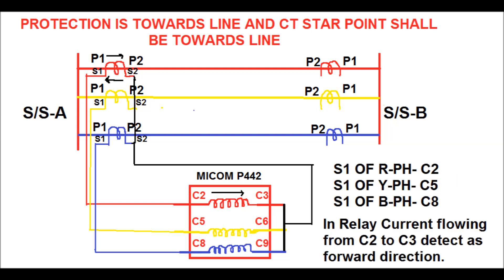When current flows in the primary side of the red phase in the direction from P1 to P2, current will flow in the secondary side from S2 to S1. In the relay, it will flow from C2 to C3 — this is the forward direction for the relay. That is, for proper polarity, P1 shall be connected on the bus side and S1 shall be connected to the C2 terminal for the MICOM P442 relay.